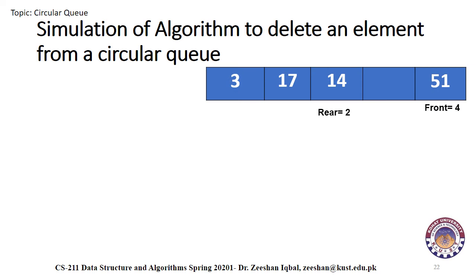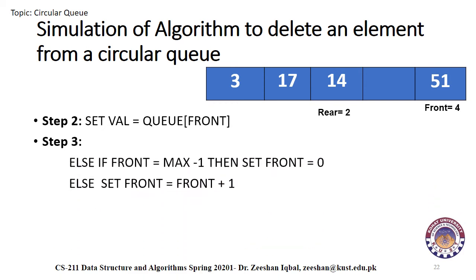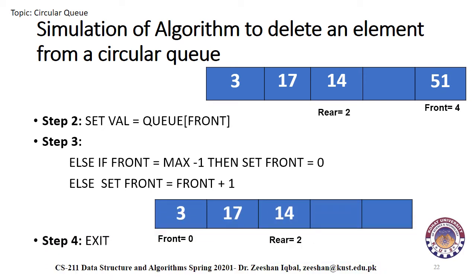Suppose we have a situation where the queue contains four elements. Front value is four, which is max minus one, and rear value is two. In step two, we temporarily store the value of queue front in the variable well. In step three, the else if condition — front equals max minus one — will be true, so we set the front value to zero. In all other cases, the front value will be incremented by one as mentioned in the last else of step three. The algorithm then exits, and after deletion, the queue will look like this.